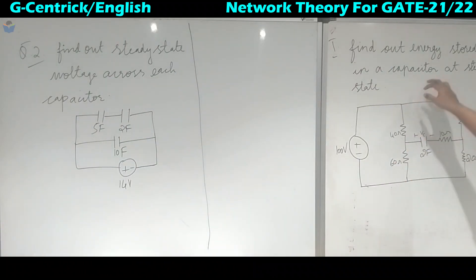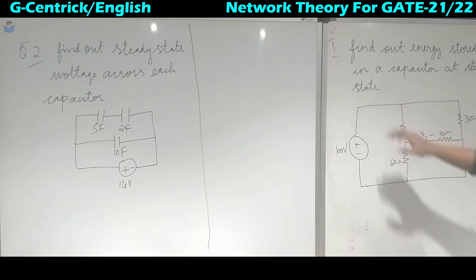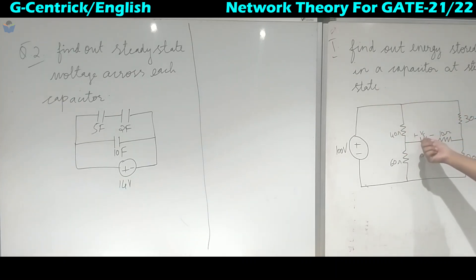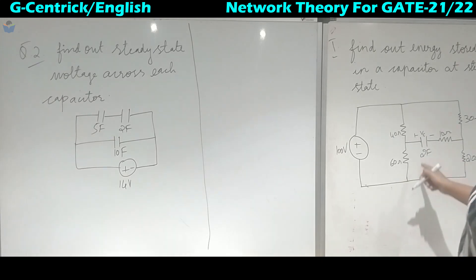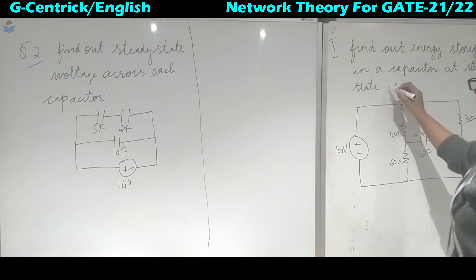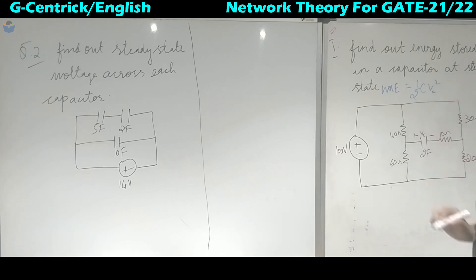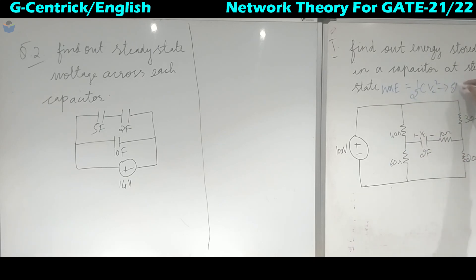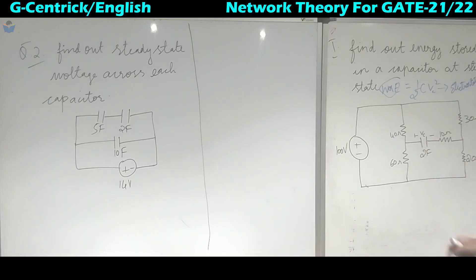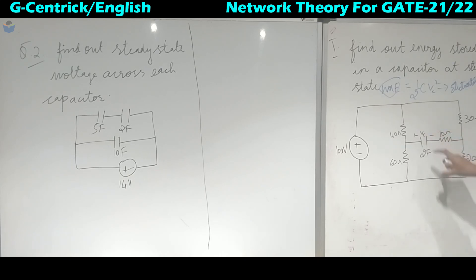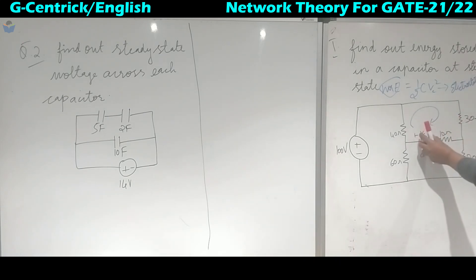First problem: we are asked to find the energy stored in a capacitor at steady state. We know that the formula for energy is W = half C V squared, which is half C times Vc squared — this is also called electrostatic energy. We need to find this value from the voltage across the capacitor. To do so, we apply KVL in this loop to get Vc.